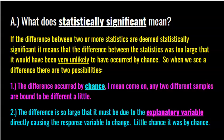What does statistically significant mean? It means that if the difference between two or more statistics is deemed statistically significant, the difference between the statistics was too large that it would have been very unlikely to have occurred by chance. There's no set number — some kids think if it's 10% or bigger it's significant, but that's not the case. I've seen experiments where there was a 40% difference and it was not statistically significant, and experiments where there was a 1% difference and it was statistically significant.